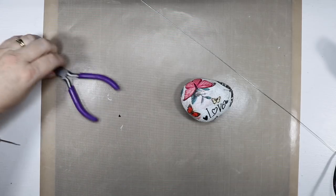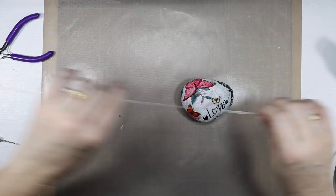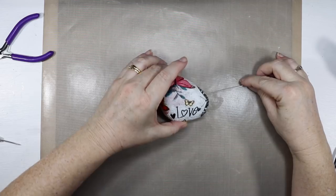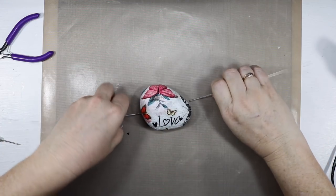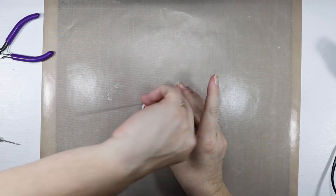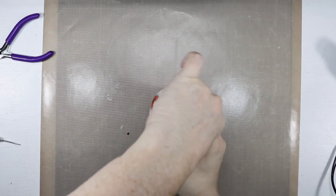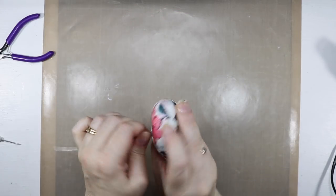So I've just got my wire, I've popped it under the rock and I'm going to twist it over to the top and I'm just going to give it two twists on the top so it'll look like an antenna I guess on top of my rock.